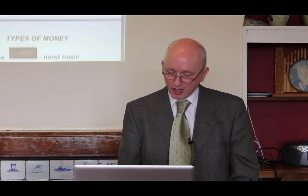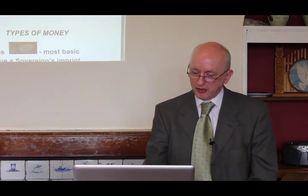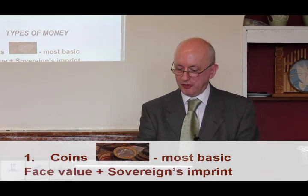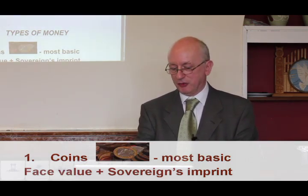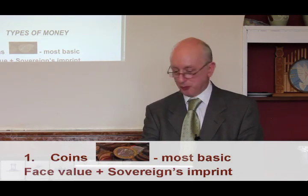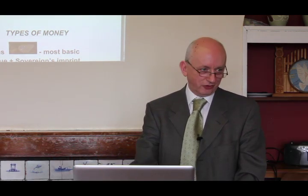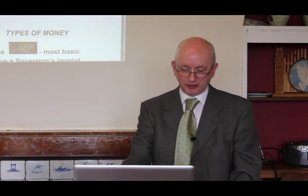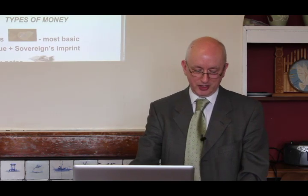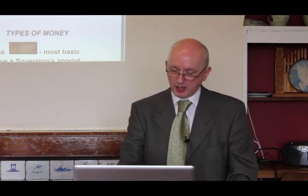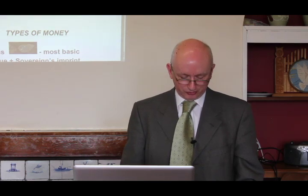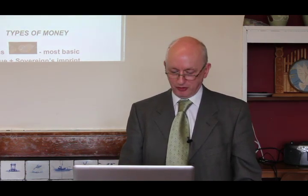To start with types of money — firstly the most basic one, coins. It may be that the original idea was that the value of the coin was the value of the metal it was made out of, but if that was ever the case it stopped being so a very long time ago. It now gets its value from the face value that's stamped on it and the sovereign's imprint — the queen's head and the inscriptions that show it's a valid coin of the realm.